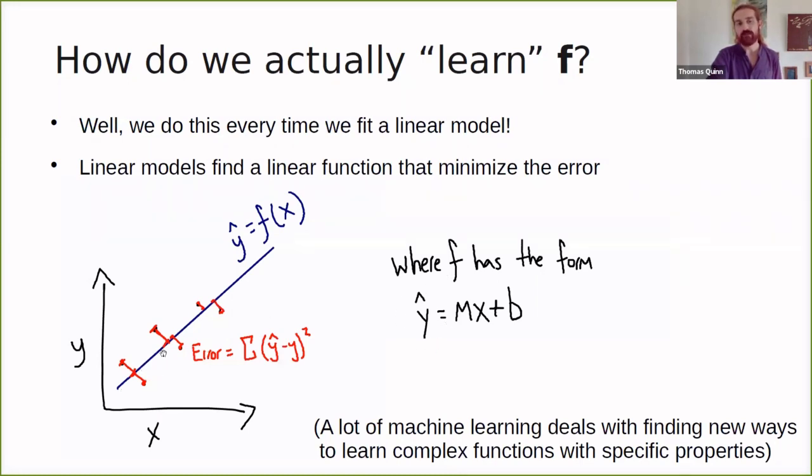And we can draw that function Y equals F of X as a line. And the error is simply the deviations off of that line raised to a power and added together. These are the residuals. These are the error. So here's one way of learning an arguably simple function F that can predict Y from X. And a lot of machine learning deals with finding new ways to learn complicated functions that perform this basic type of task, but functions that have some specific properties.